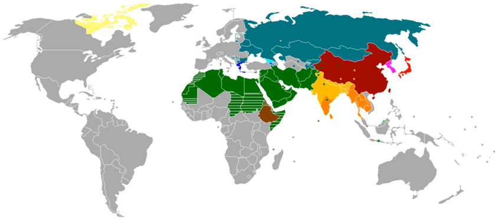Writing systems were preceded by proto-writing — systems of idiographic and/or early mnemonic symbols. The best known examples are the Jiahu symbols, carved on tortoise shells in Jiahu c. 6600 BC; Vinca symbols and Tartaria tablets c. 5300 BC; early Indus script c. 3500 BC. The invention of the first writing systems is roughly contemporary with the beginning of the Bronze Age in the late Neolithic of the late 4th millennium BC. The Sumerian archaic cuneiform script and the Egyptian hieroglyphs are generally considered the earliest writing systems, both emerging out of their ancestral proto-literate symbol systems from 3400 to 3200 BC, with earliest coherent texts from about 2600 BC.